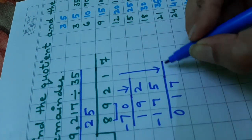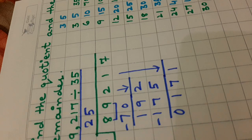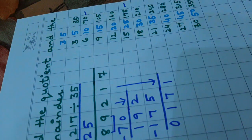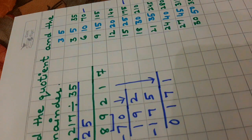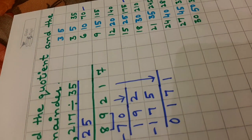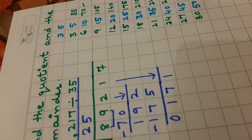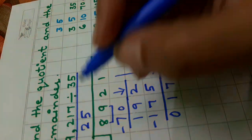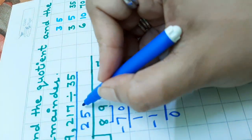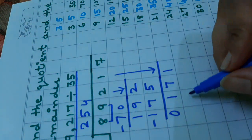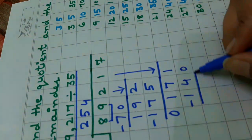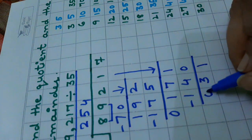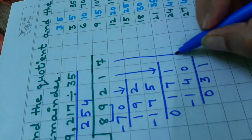Bring down 1 from here. It will become 171. Find 171 or the number lesser than 171 from the table of 35. It is 140. 35 fours are 140. Subtract it. 1 minus 0 is 1. 7 minus 4 is 3. 1 minus 1 is 0. Bring down 7.